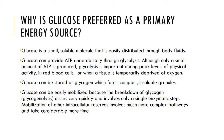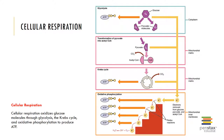Glucose has a number of factors which make it the preferred primary energy source for all of our cells. It's a small, soluble molecule. It can provide ATP anaerobically as well as aerobically. It can be stored as glycogen, and it's easily mobilized. The full enzymatic breakdown of glucose is demonstrated here, from glycolysis all the way through oxidative phosphorylation to produce ATP.